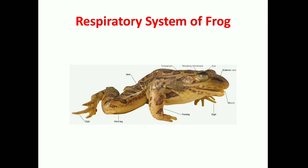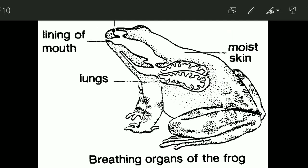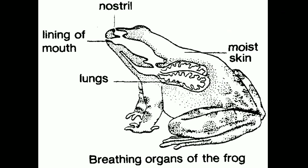Good afternoon. In today's lecture, I'm going to talk about the respiratory system of frog. In my previous lecture, I explained morphology and skin of frog. Frogs have a variety of respiratory organs — they can respire through skin, through the lining of buccal cavity and pharynx, and also through lungs. Due to that, they have three types of respiration: cutaneous respiration through skin, buccopharyngeal respiration through the lining of buccal cavity and pharynx, and pulmonary respiration through lungs.